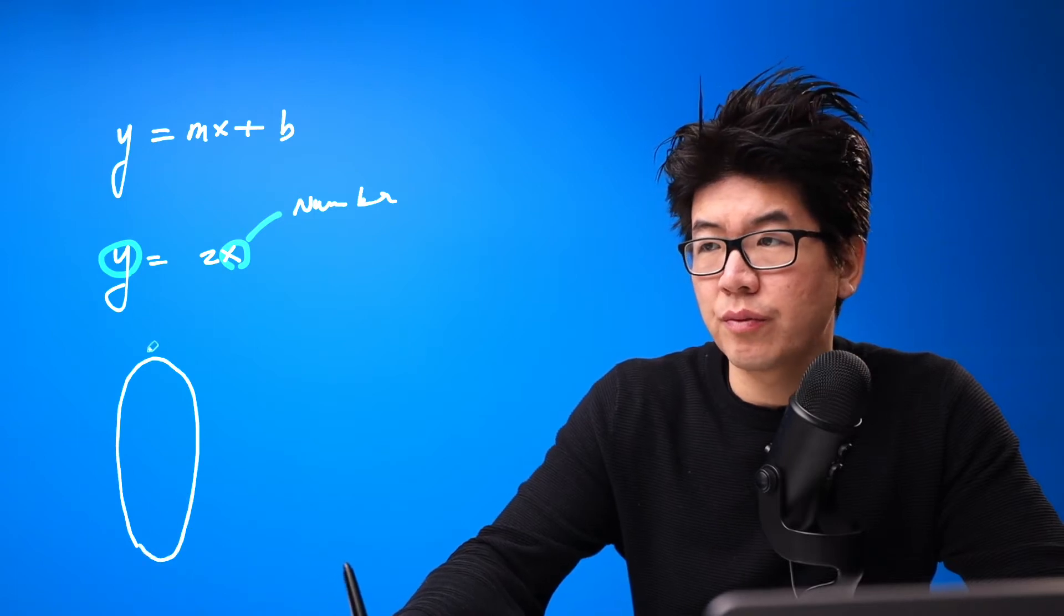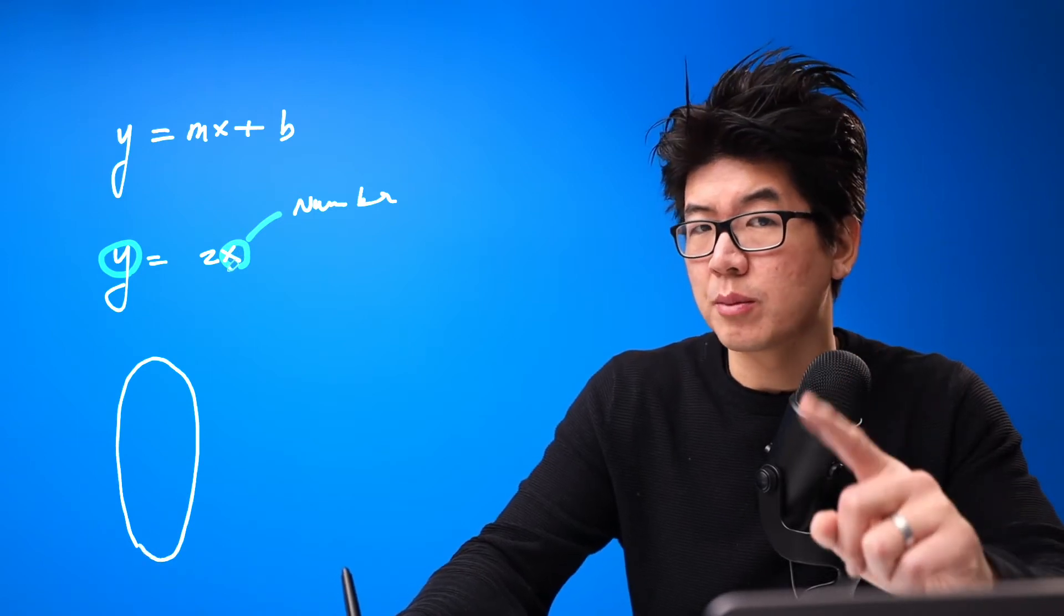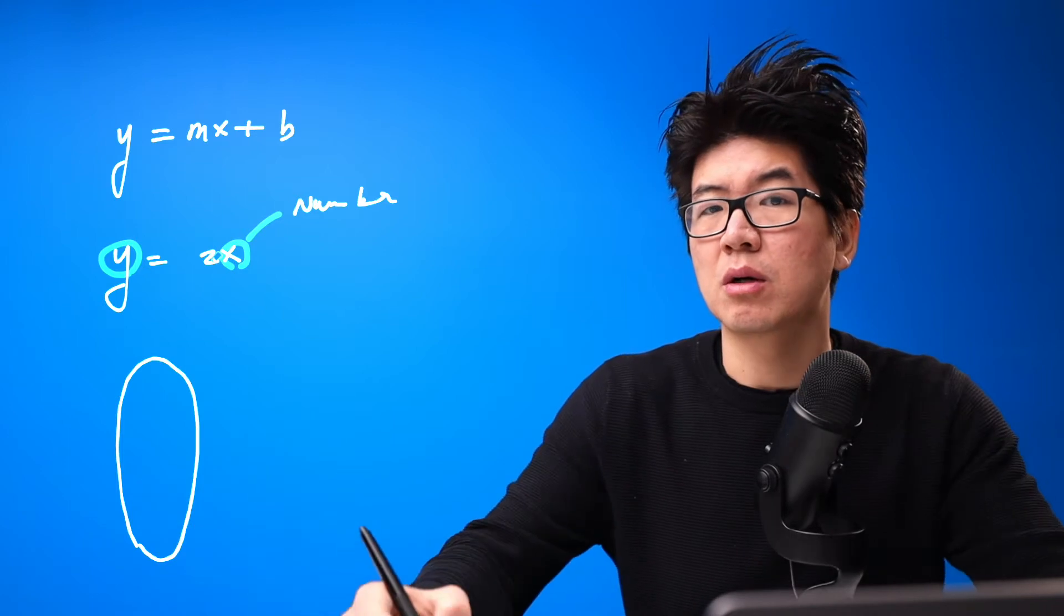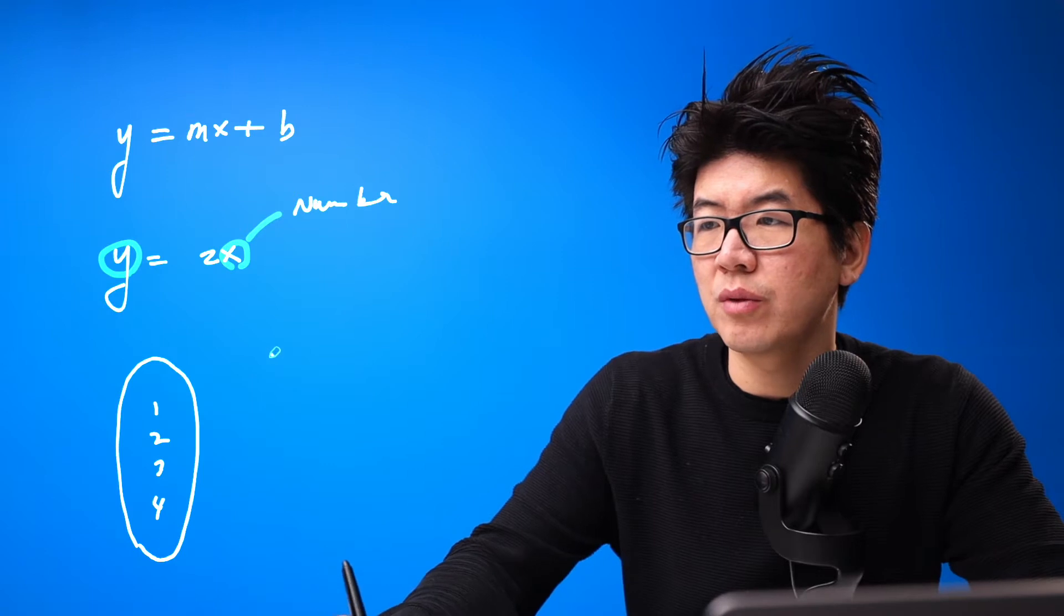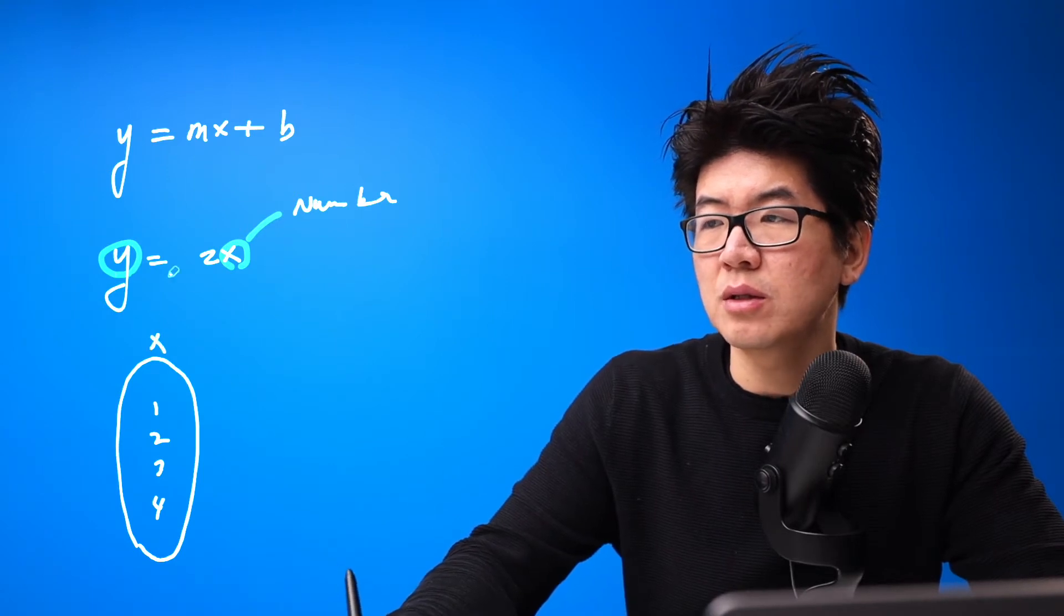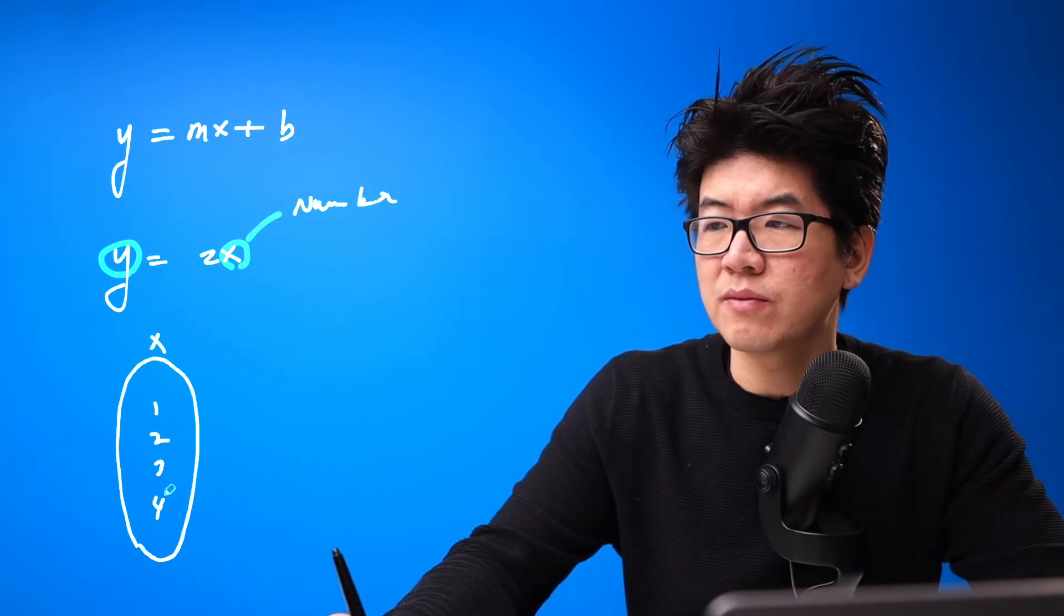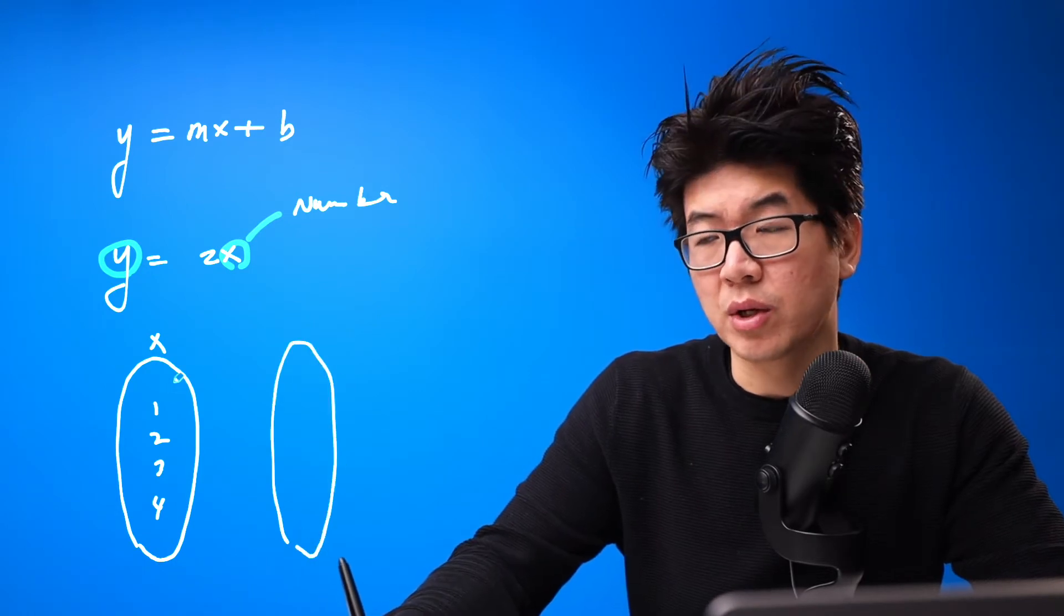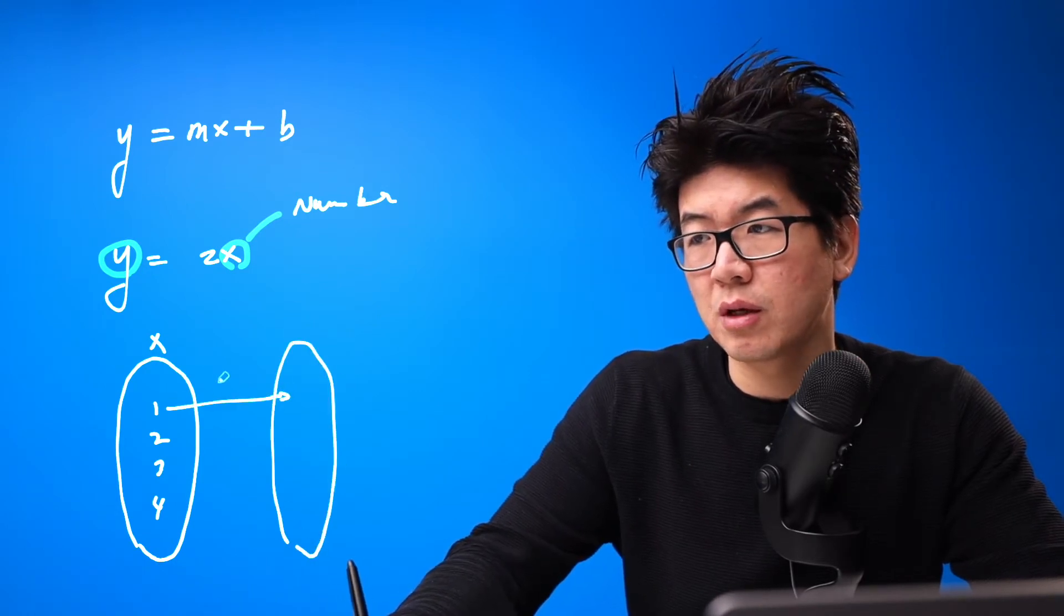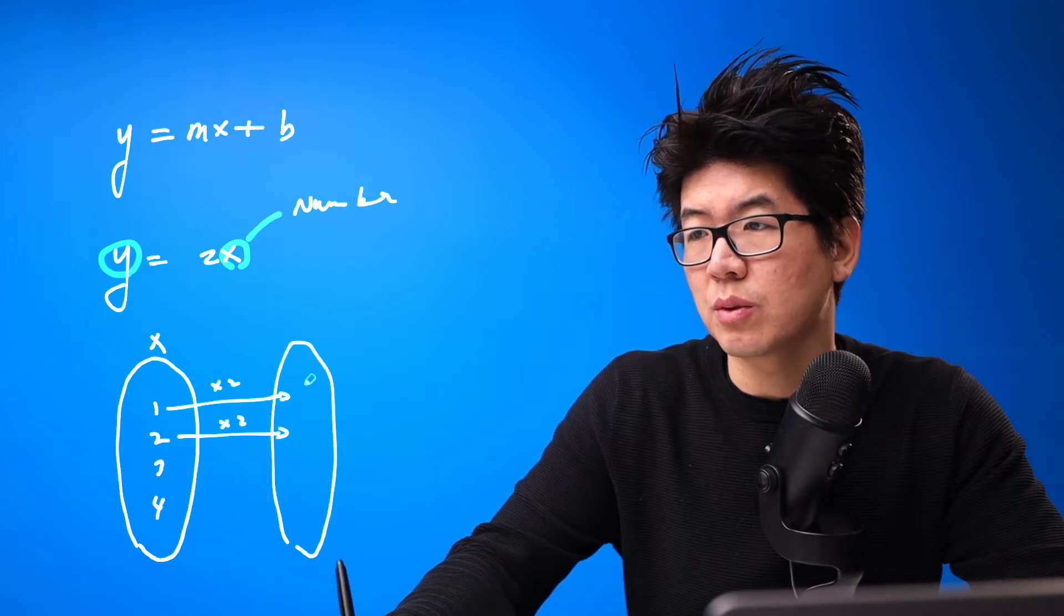We're not talking about one number; we're talking about a group of numbers. So let's say we have 1, 2, 3, 4. If these are x's, this rule tells you to assign these values to another set by doubling them.